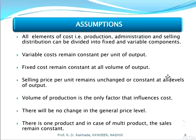Selling price per unit remains unchanged or constant at all levels of output — whether we consider the first 100 units or all 1,000 units, the selling price is the same. Volume of production is the only factor that influences cost in this model. There will be no change in the general price level. In the case of multiple products, the sales mix remains constant.